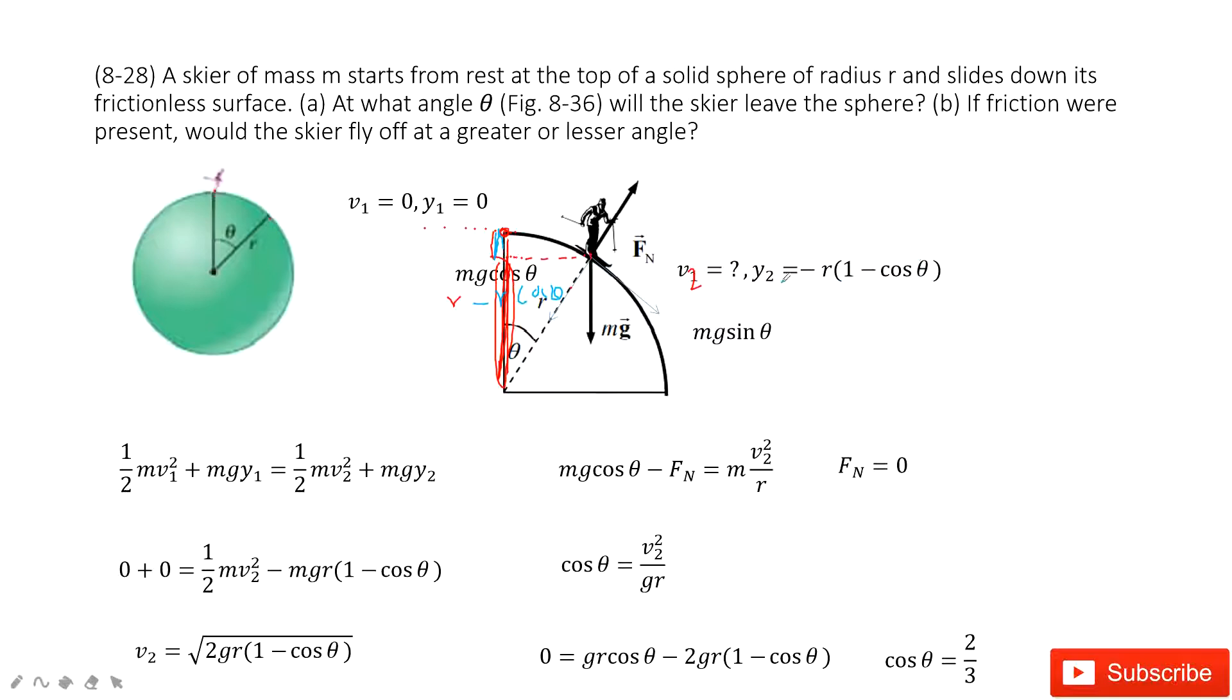Now for this person moving on this circle, the energy is conserved. So initial energy equals to final energy. So initial energy is one-half mv1 square kinetic energy plus the potential energy mgy1 equals to the final energy one-half mv2 square plus mgy2.